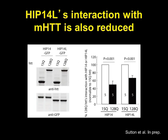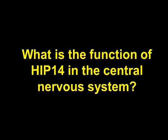HIP-14-L, just like HIP-14, also shows reduced interaction with mutant huntingtin. As you can see here, looking at both HIP-14 as a control and HIP-14-L, there is a significant reduction in interaction with mutant huntingtin in the presence of polyglutamine expansion. The levels of huntingtin are normal, but the level of interaction is significantly reduced.